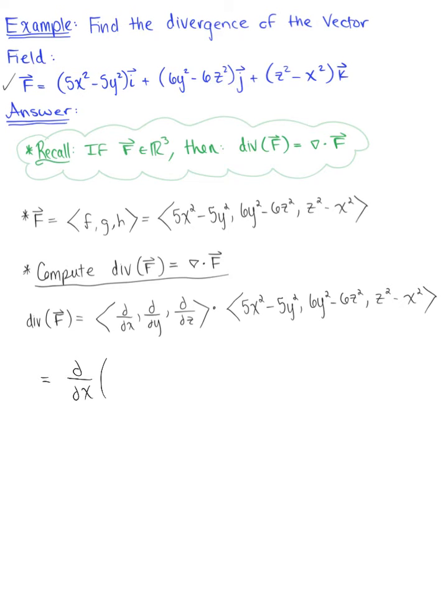We're going to take the partial derivative with respect to x of that F component, 5x squared minus 5y squared, plus we're going to take the partial derivative with respect to y of the G component, 6y squared minus 6z squared, plus we're going to take the partial derivative with respect to z of the H component, z squared minus x squared.